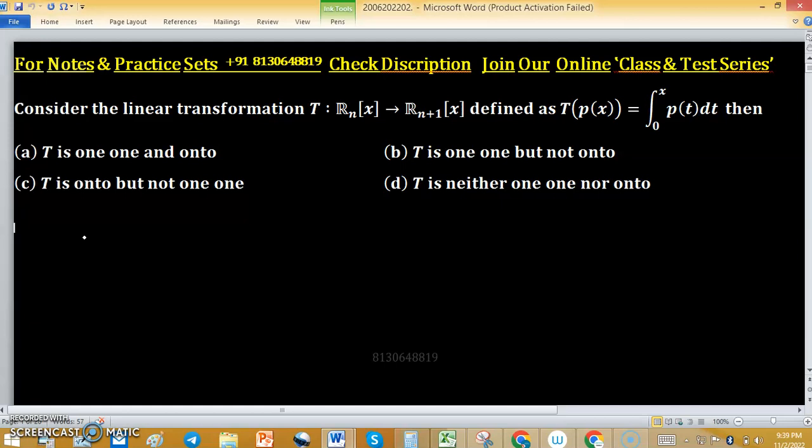We have to check if this linear transformation is one-to-one or onto in all these four options. The dimension of the domain of this linear transformation is n+1, and the dimension of the co-domain will be n+2. So the matrix representation of this linear transformation will have size (n+2) × (n+1).